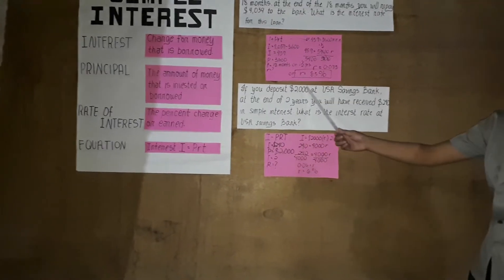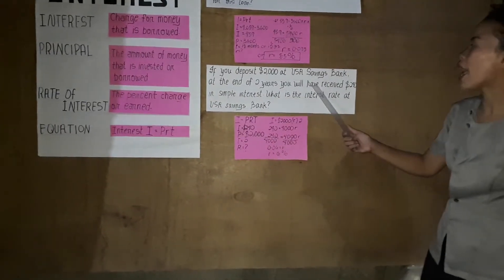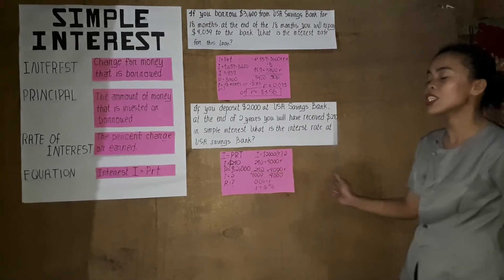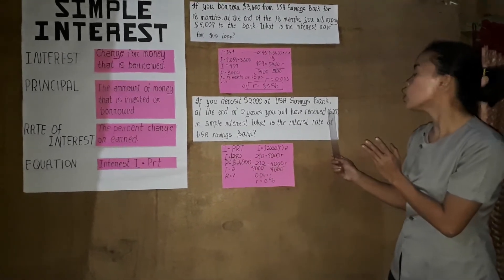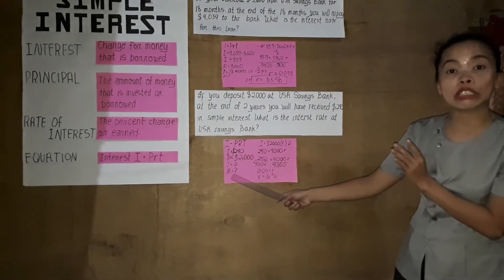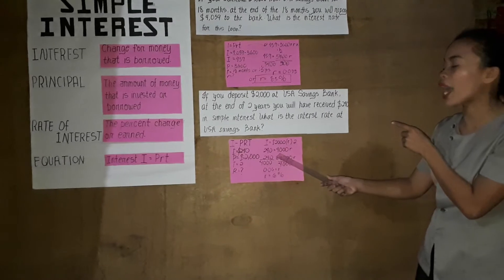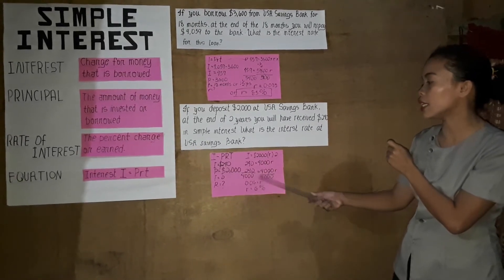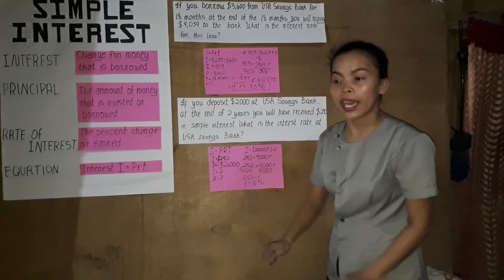Example two: if you deposit $2,000 at USA Savings Bank and at the end of two years you have received $240 in simple interest, what is the interest rate? The interest is $240, principal is $2,000, and time is two years. Substituting: $240 = $2,000 × R × 2 = $4,000 × R. Dividing both sides by $4,000 gives R = 0.06, or 6%. Any questions? Did you catch up?